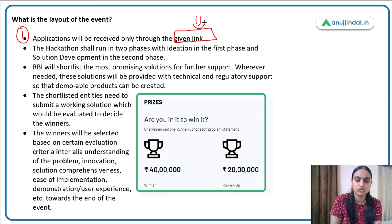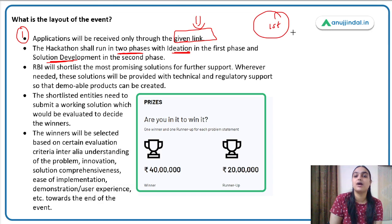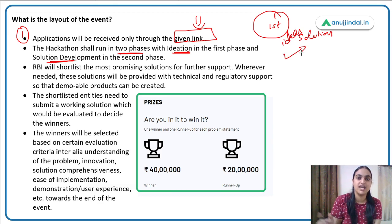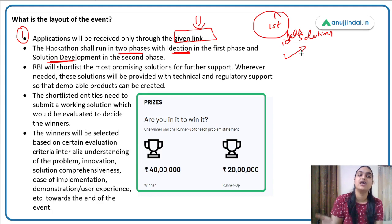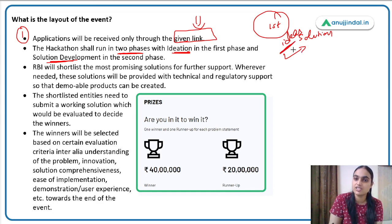The hackathon will run in two phases: the ideation phase and the solution development phase. In the first phase, solutions and ideas to address different problems are invited. These ideas will then be assessed and the best ones selected. In the second phase, those best ideas need to be worked upon — solutions and products need to be developed — and then they will be assessed by the judges and the winner will be rewarded.